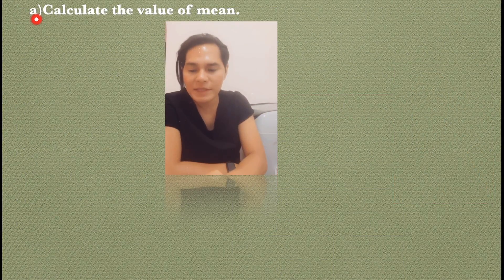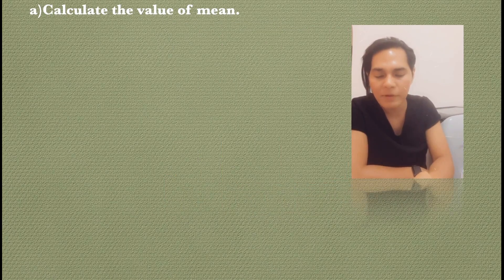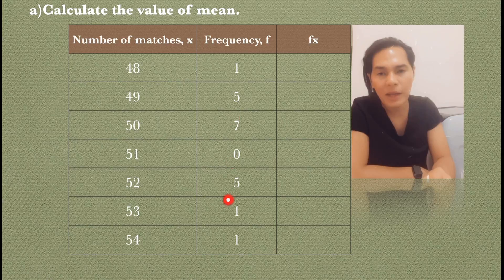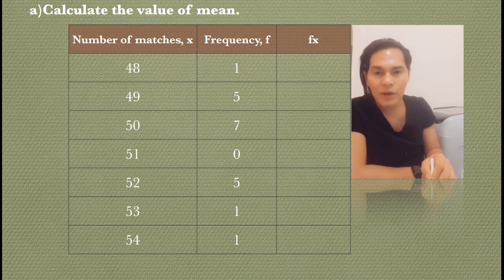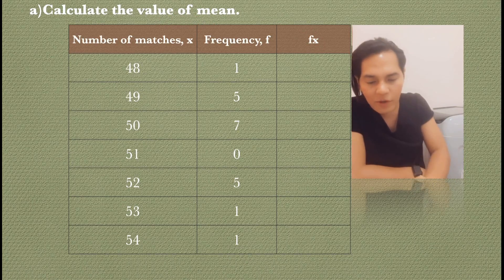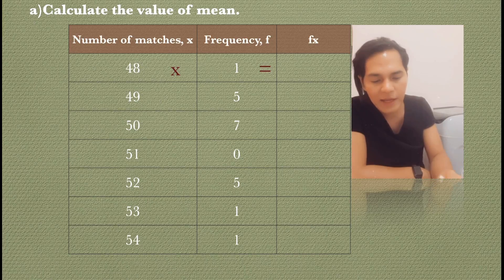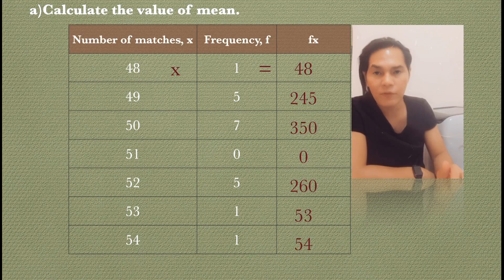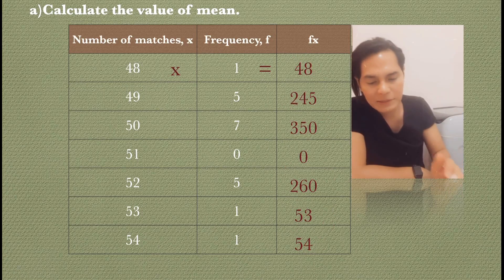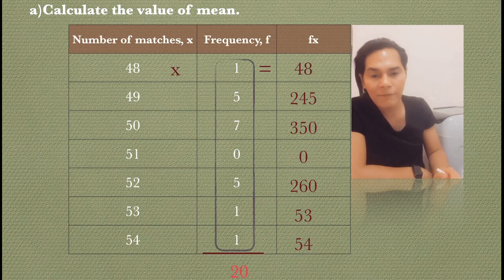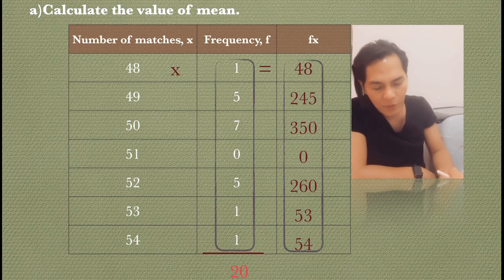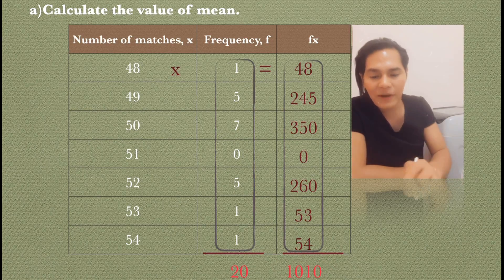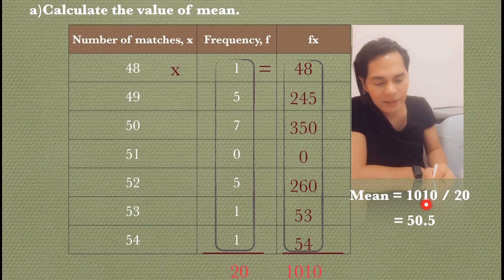Let's start solving for letter A — calculate the value of the mean. We need the table with number of matches (X), frequency (F), and an additional column Fx. First, get the product of X and F for each row: 48×1=48, 49×5=245, 50×7=350, 51×0=0, 52×5=260, 53×1=53, 54×1=54. Then add up the frequency — total is 20. Add up Fx — the sum is 1010. To find the mean, divide 1010 by 20. Our mean is equal to 50.5.